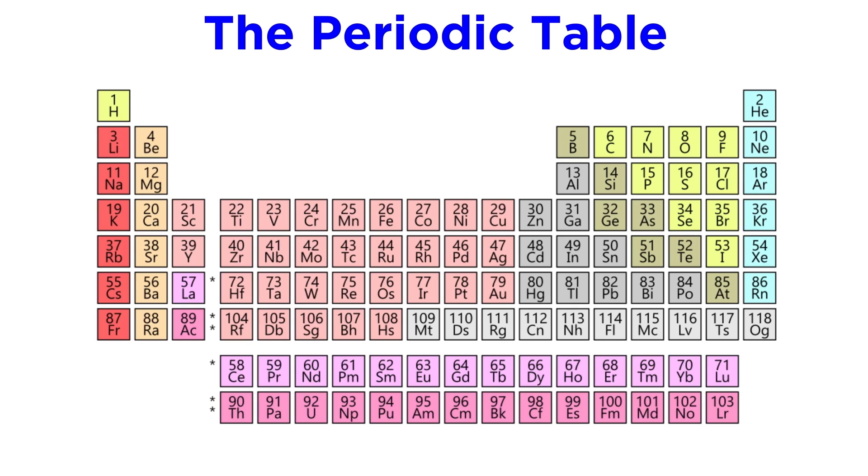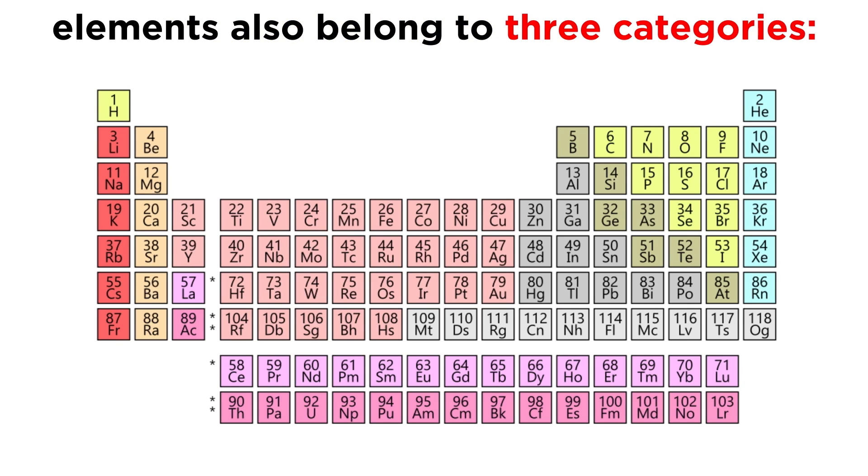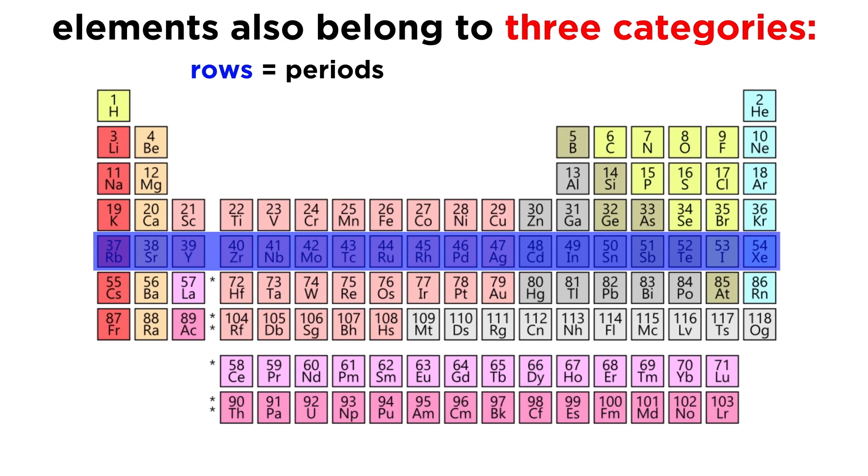So here is the periodic table as it is today. On this table, each box represents an element, and these elements are arranged into rows, which are called periods. This is how we display the periodicity of properties, because with the start of each new row, we start again with a new repetition of these shared properties that the elements tend to exhibit.